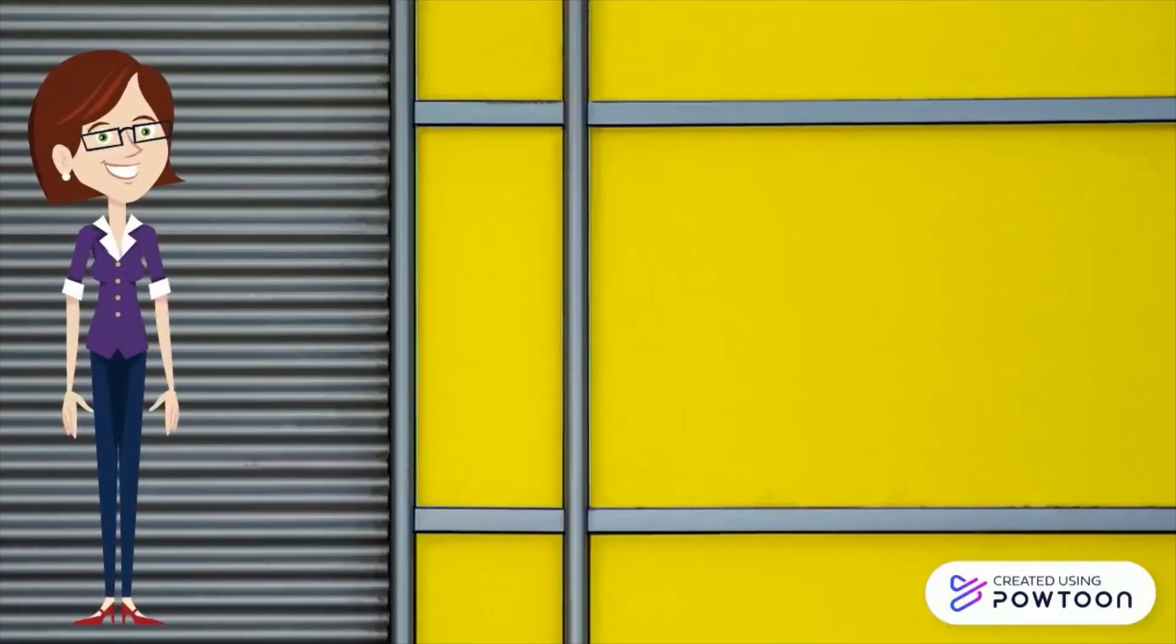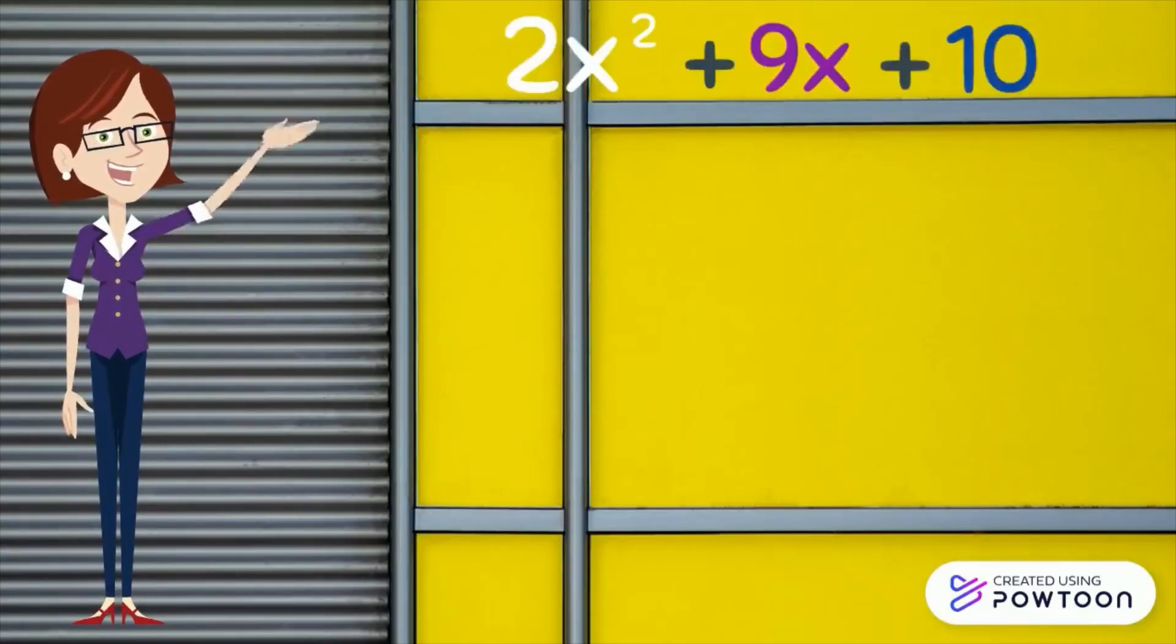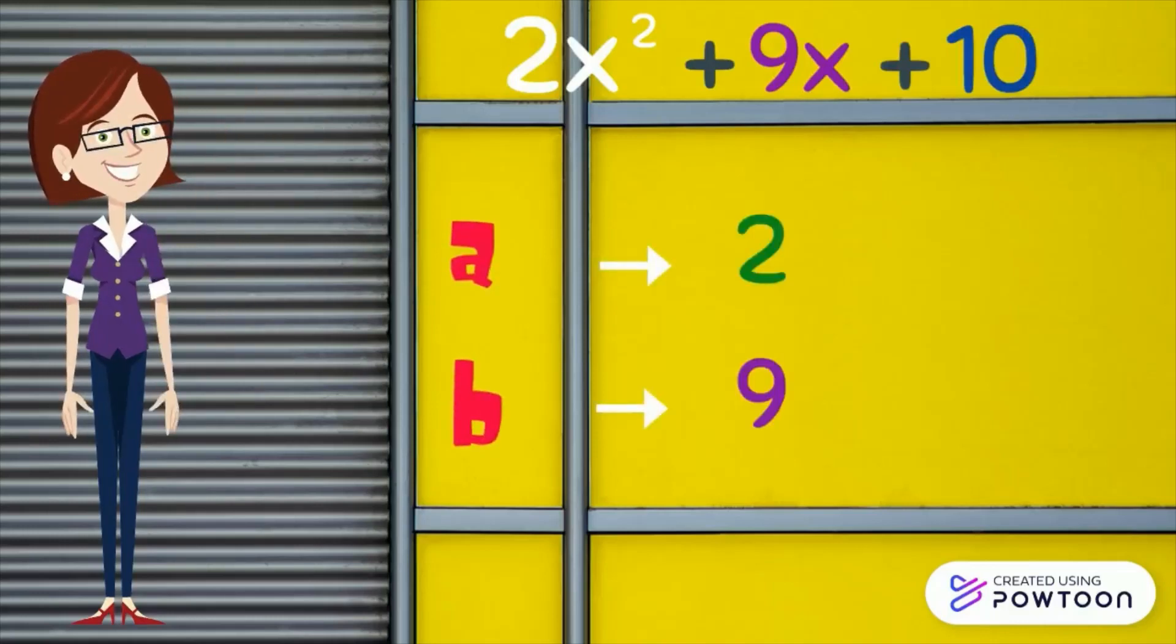Let us check this out again. The polynomial 2x squared plus 9x plus 10. Our a is 2, b is 9, and c is 10.